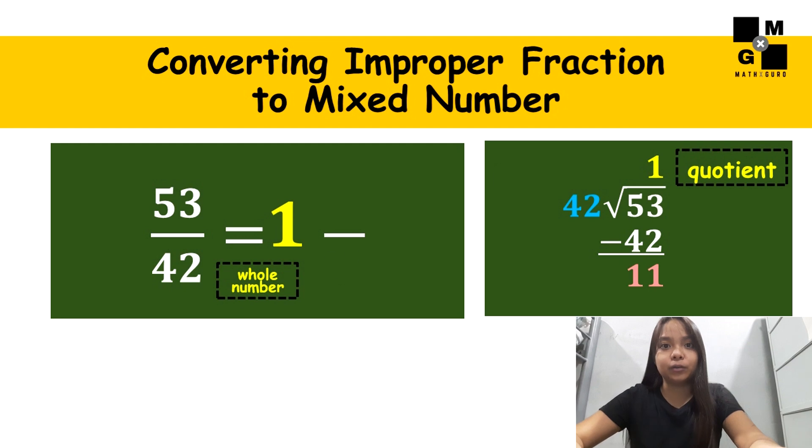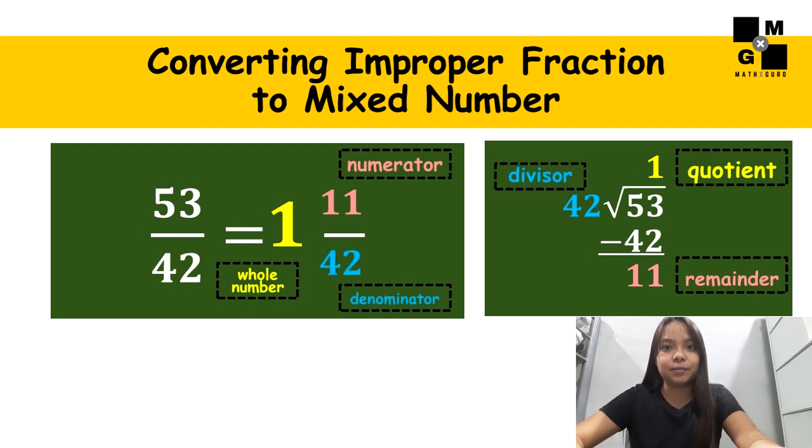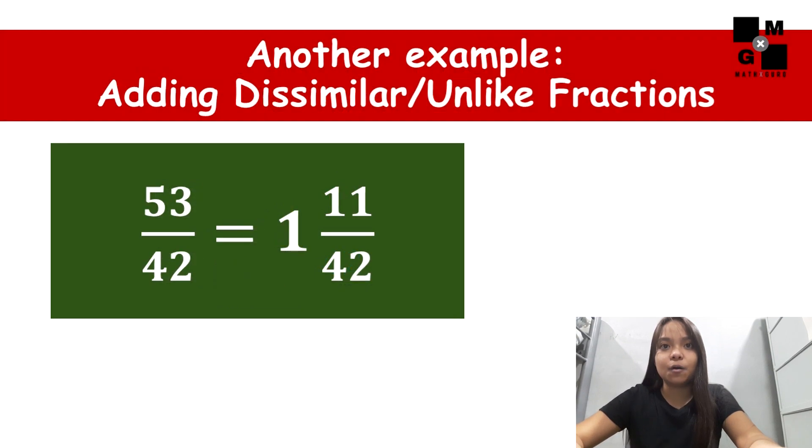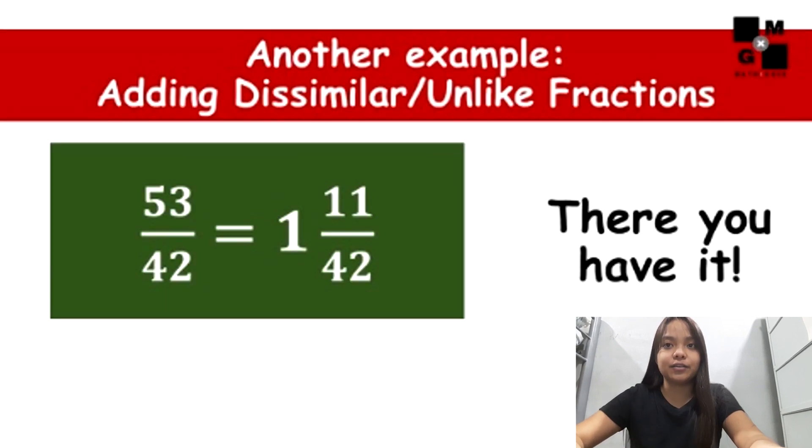The quotient will become the whole number. The divisor will become the denominator. And the remainder will become the numerator. Therefore, fifty-three over forty-two in mixed number form is one and eleven over forty-two.